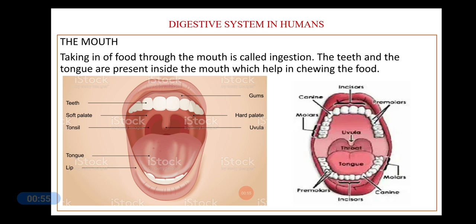The lips are present on these two jaws, so the movement of the lips helps in closing or opening the mouth, and also during swallowing of food and while speaking. Inside the mouth there are a set of teeth and the tongue. When you put food inside the mouth, we call it ingestion. There are two sets of teeth — one in the upper jaw and one in the lower jaw.